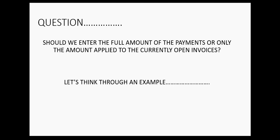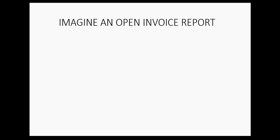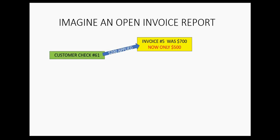Let's think through an example. Imagine we have an open invoice report with only one invoice on it. The invoice was $700, but now is only $500, because there was a $200 payment applied to that invoice. That's why it's the only invoice on the open invoice report at the end of usage of the old system — and that's what we have to put in the new system.